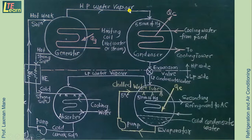High pressure water vapor when comes to the condenser. In the condenser pressure about 55 mm of Hg is maintained. So here this high pressure water vapor rejects heat to the cooling water which is circulated inside this tube.